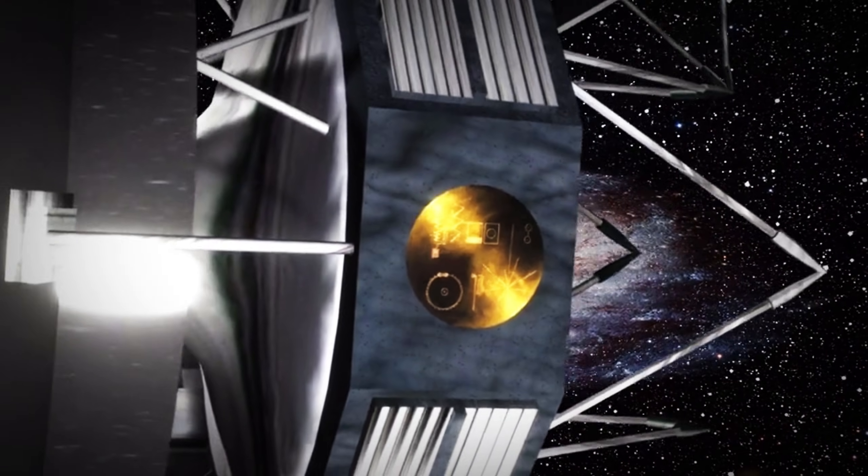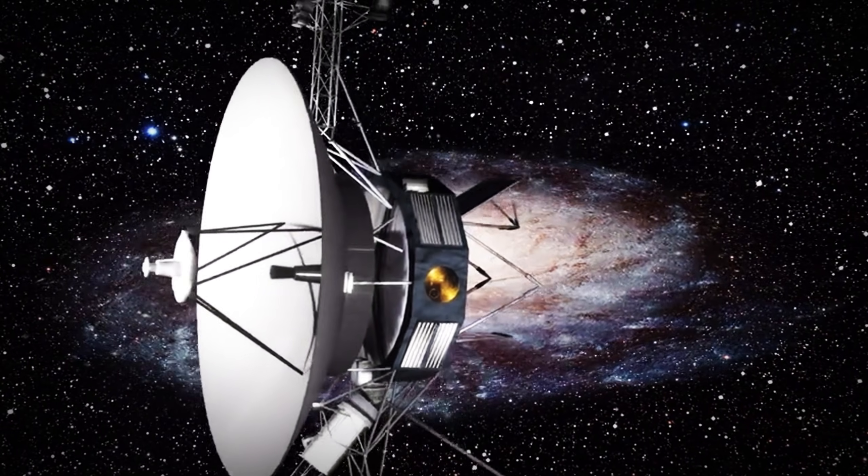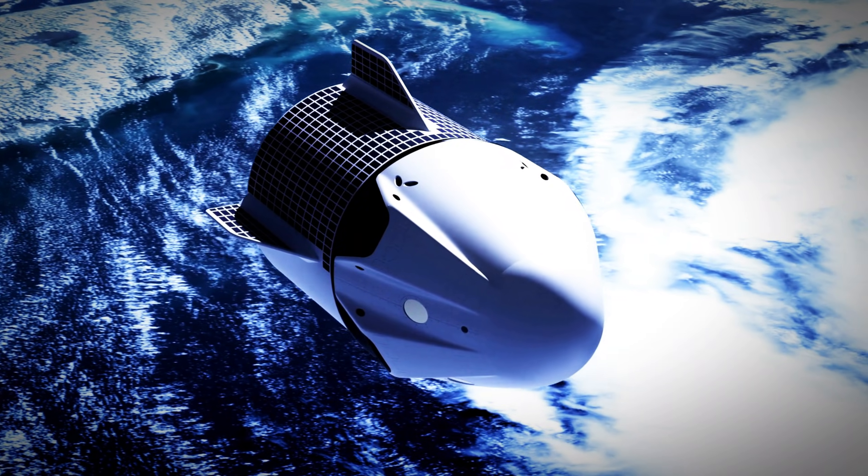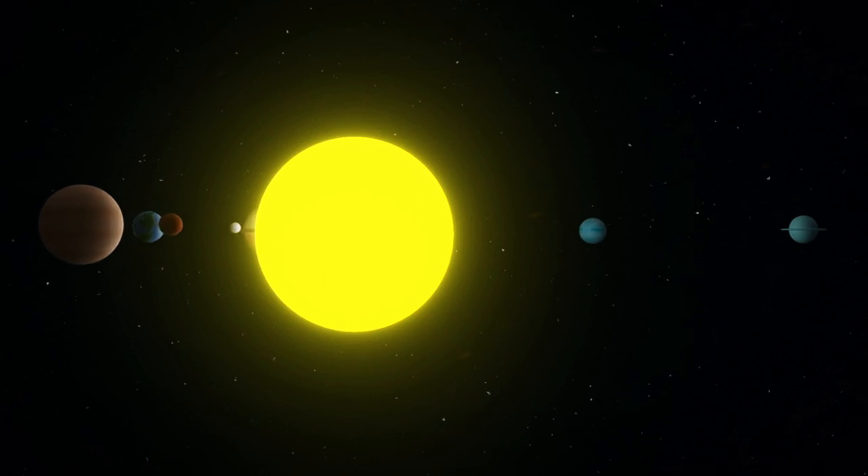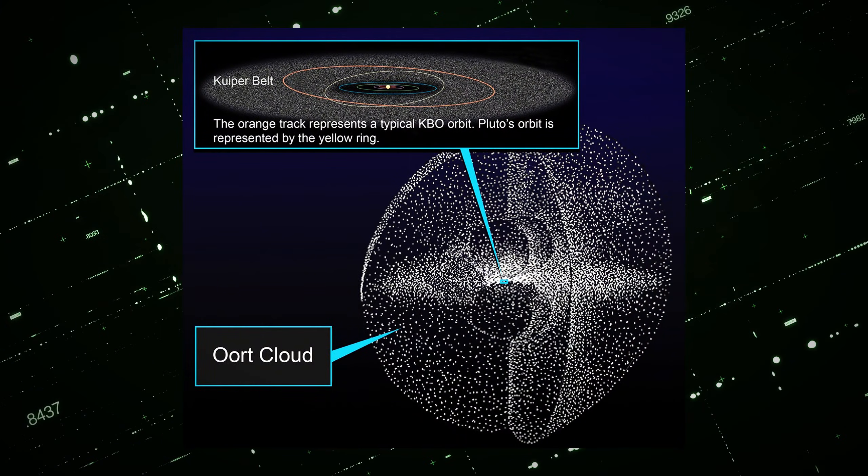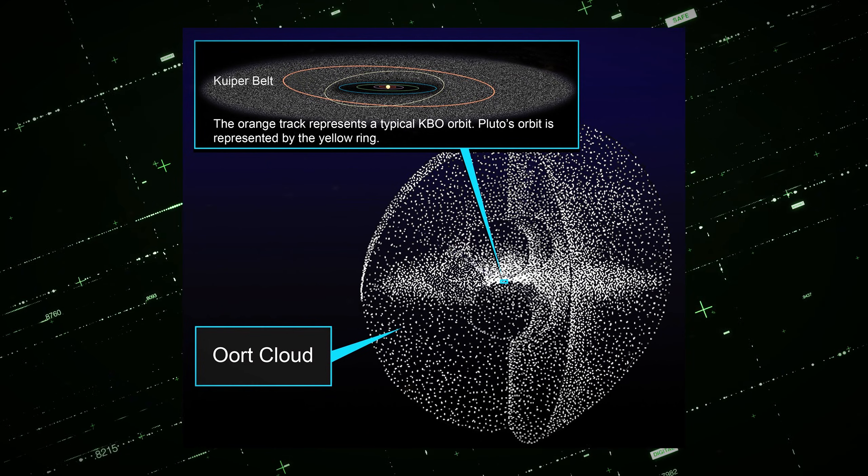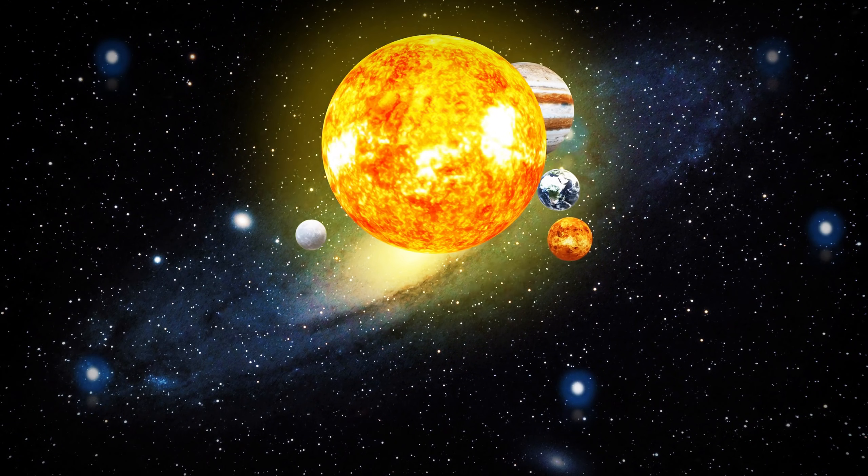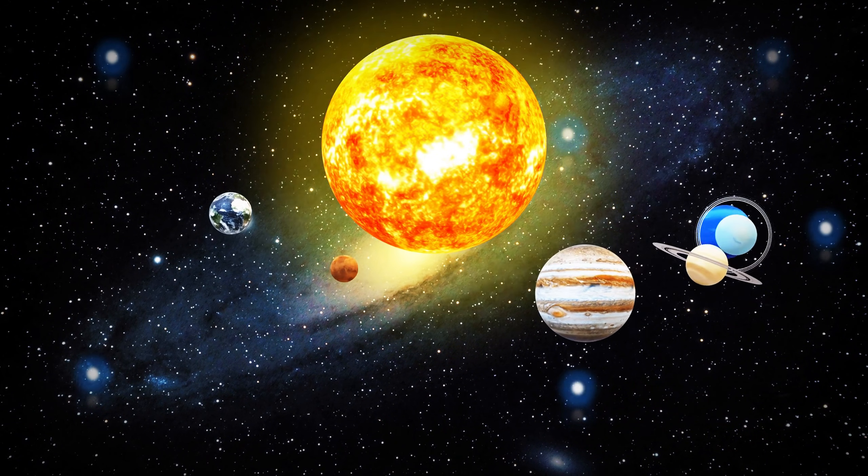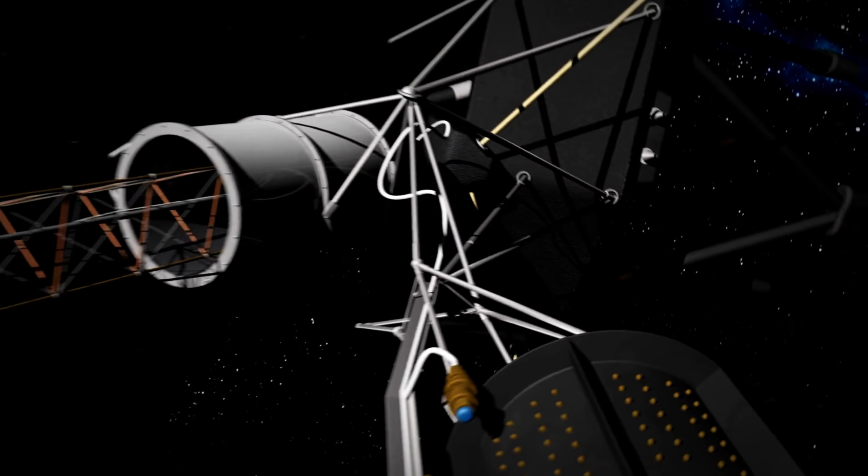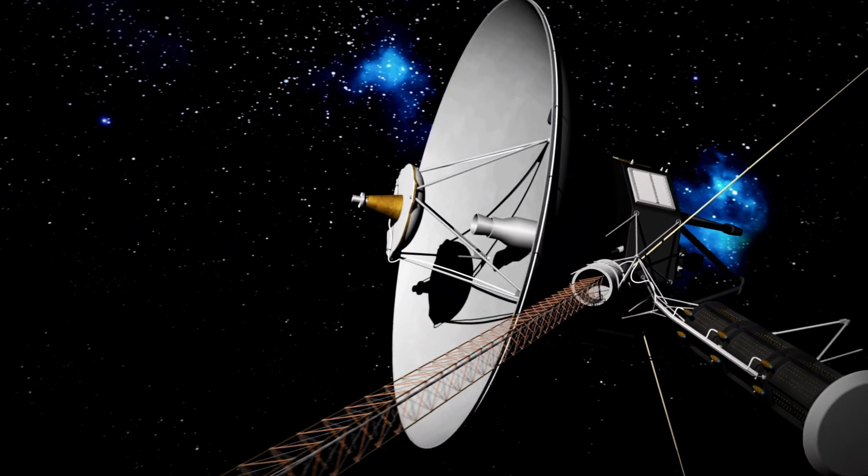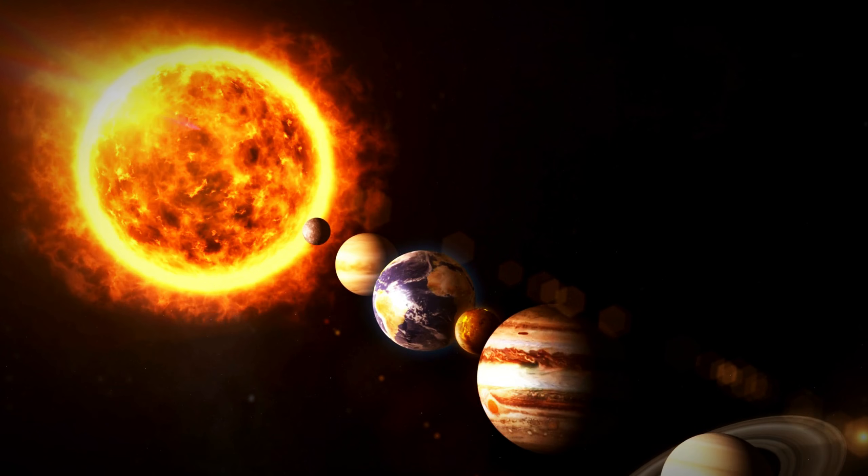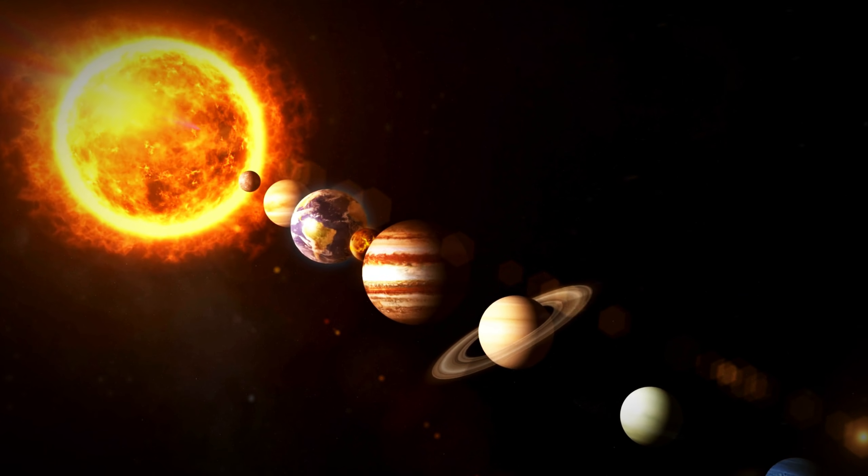But what about the Voyager probes? How far have they traveled beyond our solar system? Even scientists are amazed by the groundbreaking findings these spacecraft have delivered. One of the most intriguing revelations is that our entire solar system, including the far-reaching Oort cloud, which sits about a light year from the sun, exists within a massive bubble. This bubble stretches 1,000 light years across, with the sun positioned close to its center. So, what happened when the Voyager spacecraft reached the edge of the solar system? Are we really inside a vast space bubble? And how does this discovery alter our understanding of the solar system's structure?